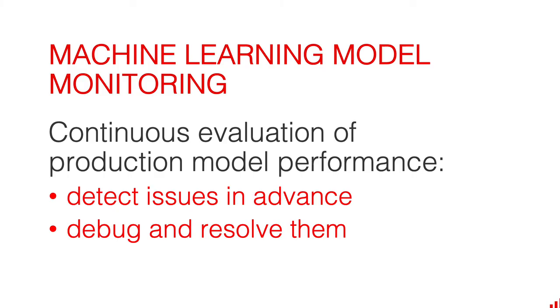As an industry, we don't yet have a lot of experience operating production machine learning models, so we still have to establish best practices and find ways to reliably operate models in production. To sum up: machine learning model monitoring is the process of continuously evaluating the performance of your models in production. We do this to detect potential issues before they affect business KPIs, and if something happens, to efficiently understand the root cause and resolve it. At Evidently, we're building open source tools to help with exactly this — check it out on GitHub, and if this is something you're looking to solve for your models, let's connect.